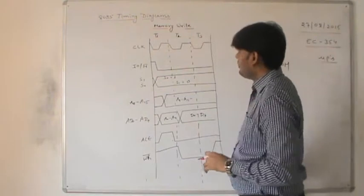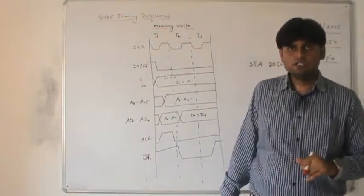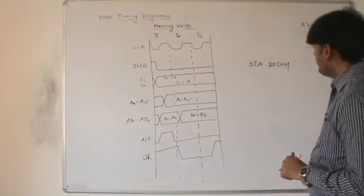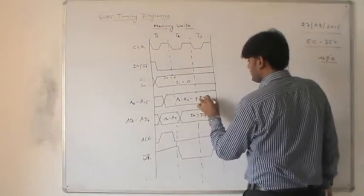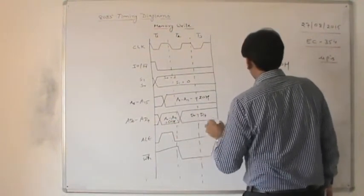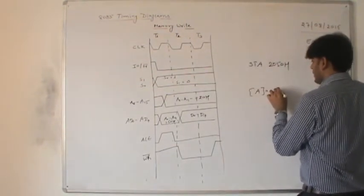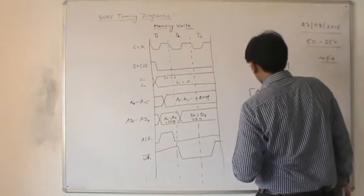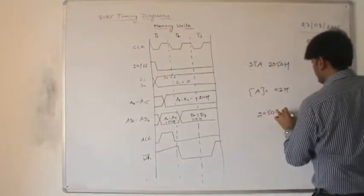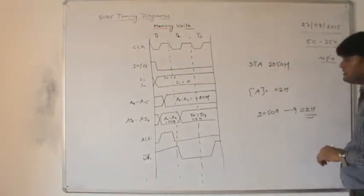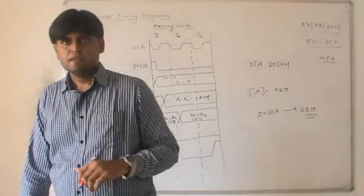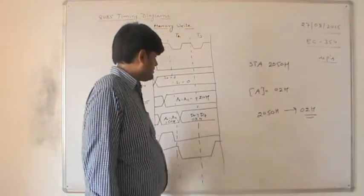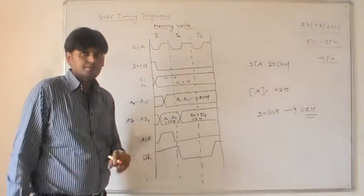During T2, the write signal is activated (active low, same as the read signal). The data to be written is placed onto the data bus D0 to D7. During T3, that data is stored into the memory location. In our example, if the accumulator contains 02H, then memory location 2050H will have 02H after the STA 2050H instruction executes.